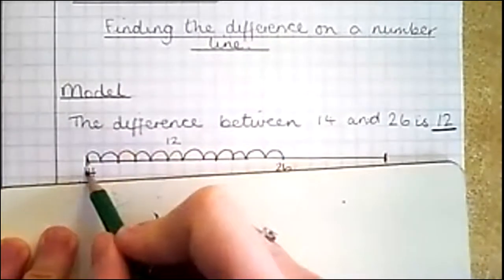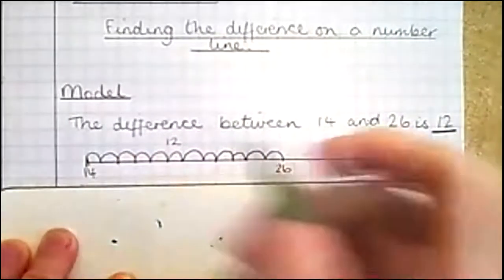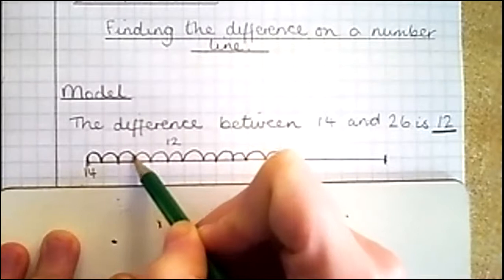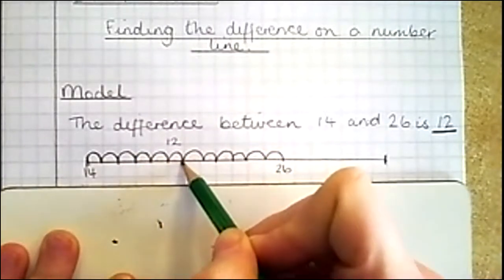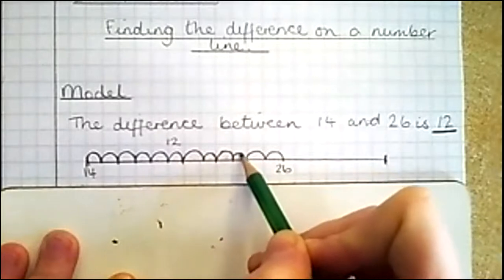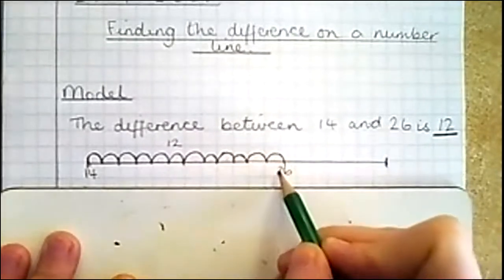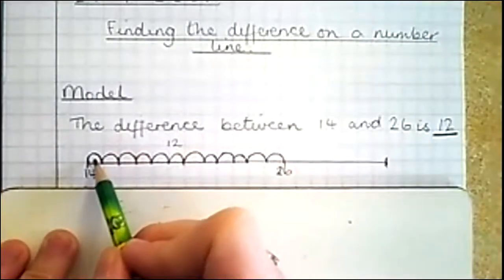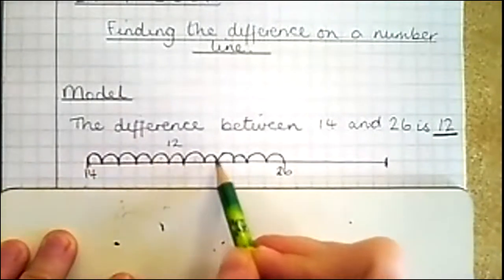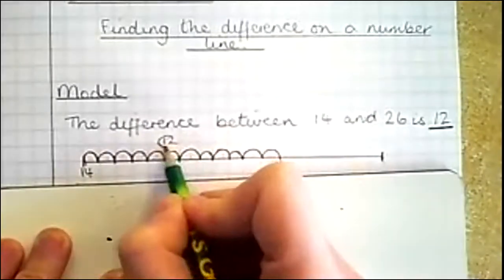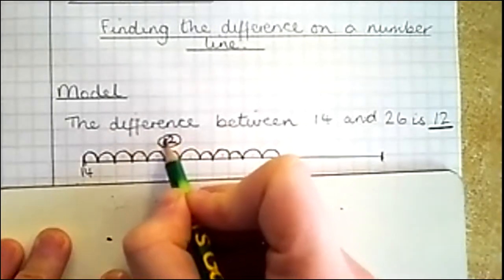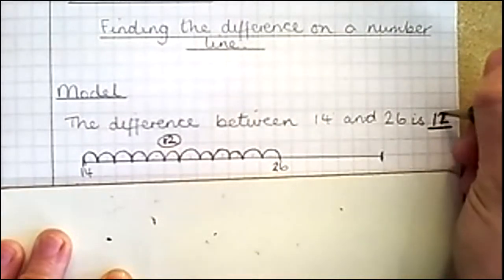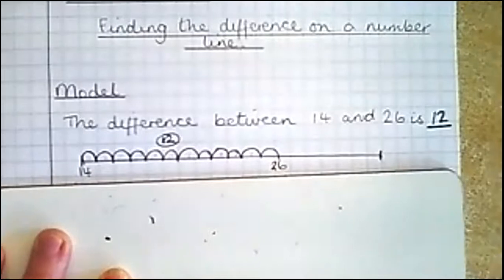So what you would have done is you'd have drawn a number line. I'd have just drawn a line that's around 20 squares long. It doesn't matter because we're not actually using the exact amount, we're just using it to help us to count. I've put 14 at one end, my smallest number. And then I counted. I went 14, 15, 16, 17, 18, 19, 20, 21, 22, 23, 24, 25, and 26. I then counted my jumps: 1, 2, 3, 4, 5, 6, 7, 8, 9, 10, 11, 12. And I know that the difference between 26 and 14 is 12. And I've underlined my answer there. I hope that makes sense.